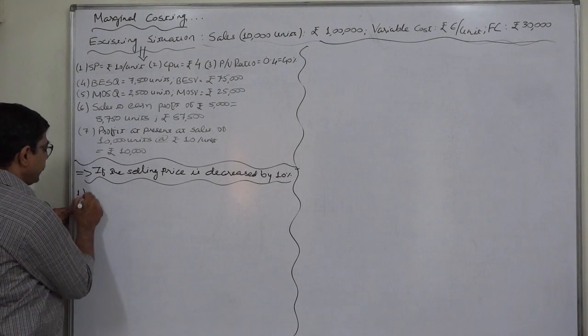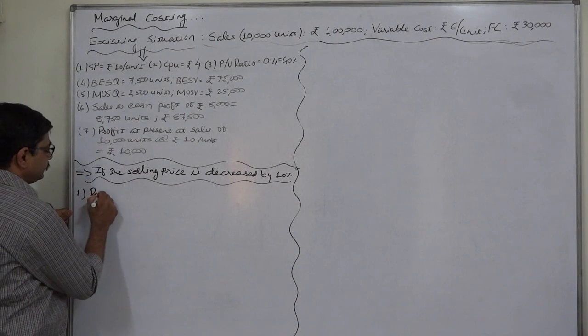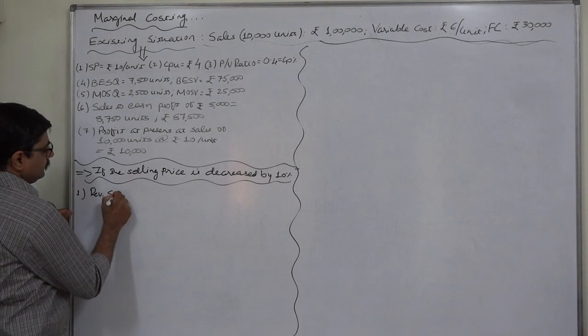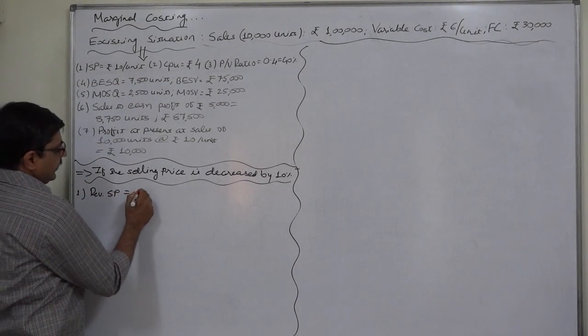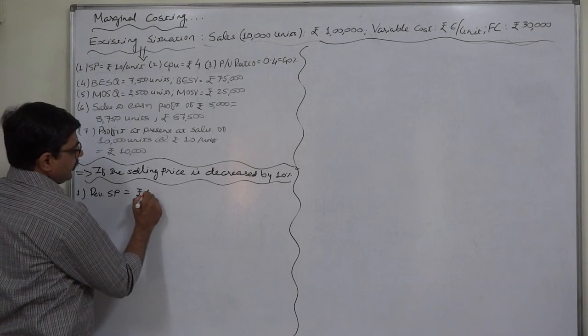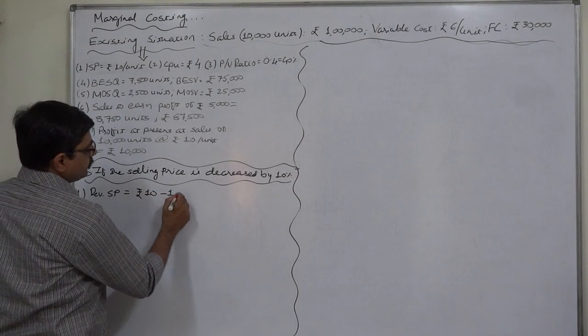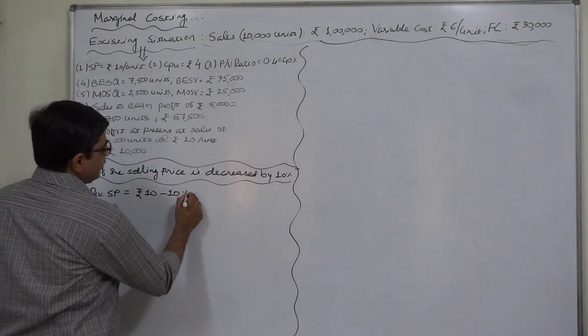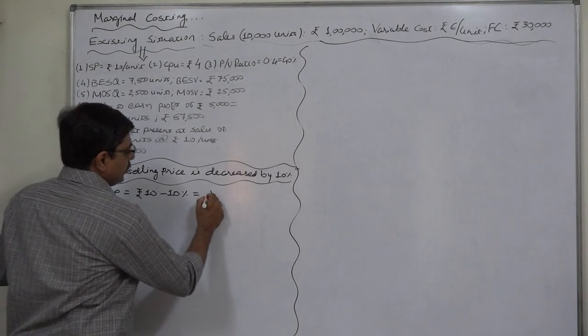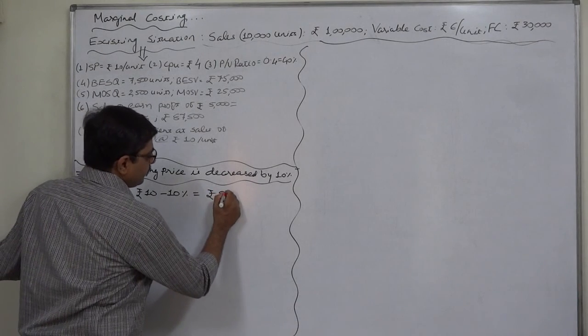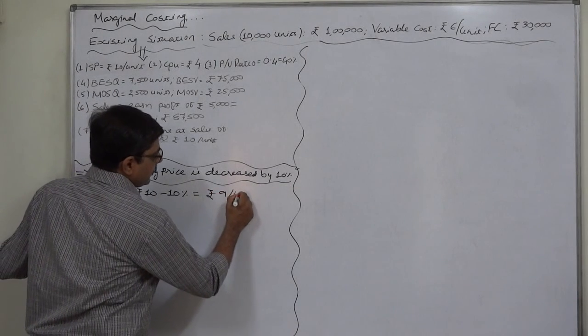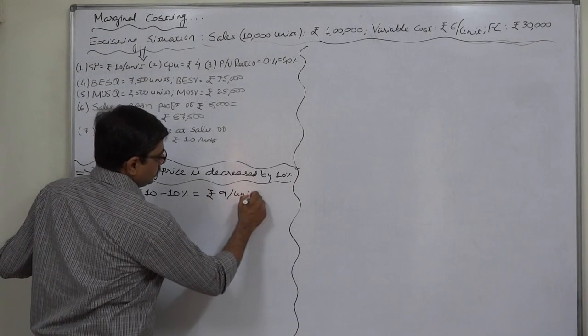First, the revised selling price. At present it is rupee 10 per unit. Now we are going to decrease it by 10 percent, so now it will be rupee 9 per unit.